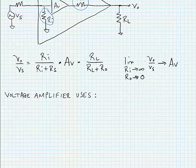So the characteristics of an ideal voltage amplifier are that RI is infinite and RO is zero.